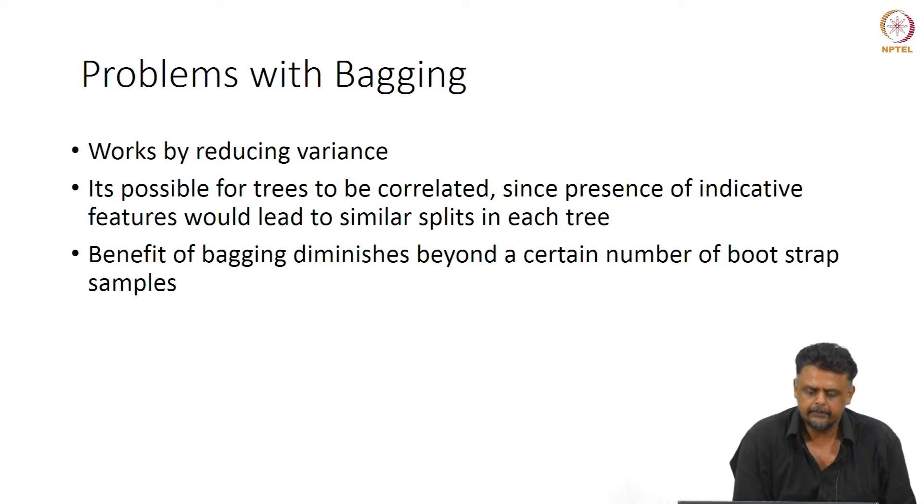We saw that bagging or bootstrap aggregation can be used to improve the variance when using binary decision trees. This is by training a bunch of decision trees using bootstrap samples of your training data. Because binary decision trees tend to overfit, having a large number of those reduces the variance and improves generalization performance.